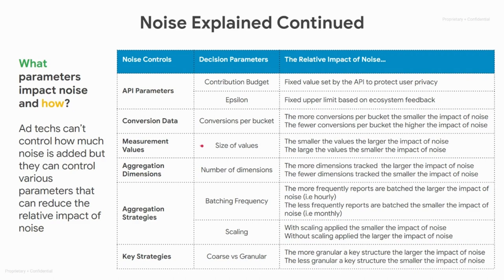Next, we have the size of values. The smaller the values, the larger the impact of noise. Thinking about the blue and orange bars again, if you are tracking purchase values of items that are smaller in value, the overall size of the blue bar will be smaller than if you were tracking the purchase value of a more expensive item.